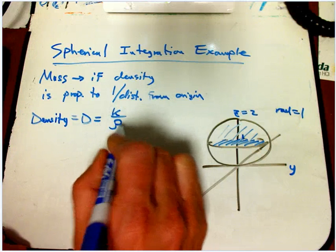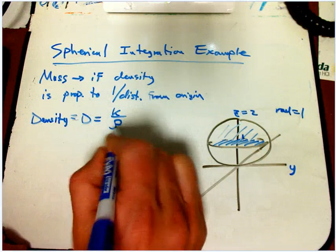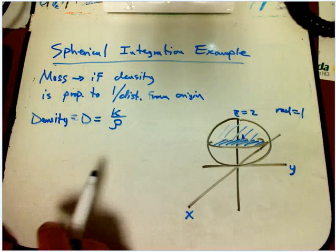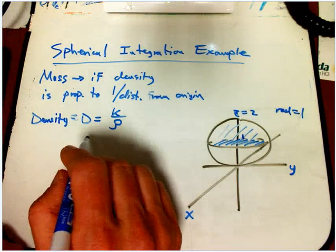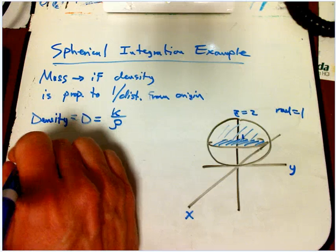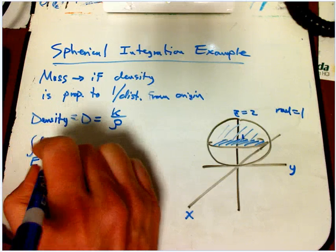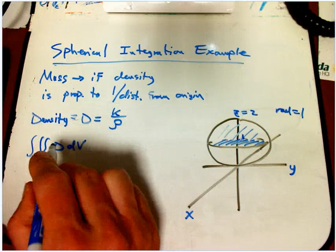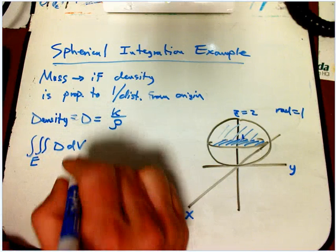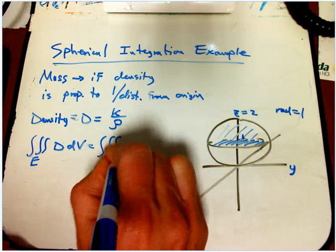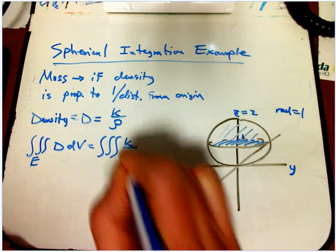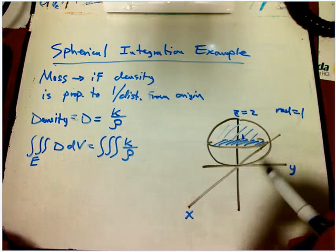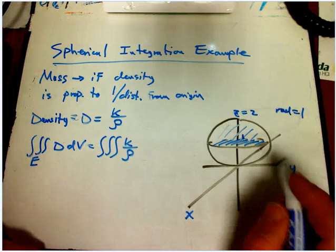And physicists would use an r here, lots of people would use an r for the radial coordinate, but we're using rho in accordance with our book. And so we want the integral over this three-dimensional region of density times dV, because that's a little bit of mass, density times volume. Or in other words, integral k over rho. And we're going to try to use spherical coordinates here, it's going to work out nicely.